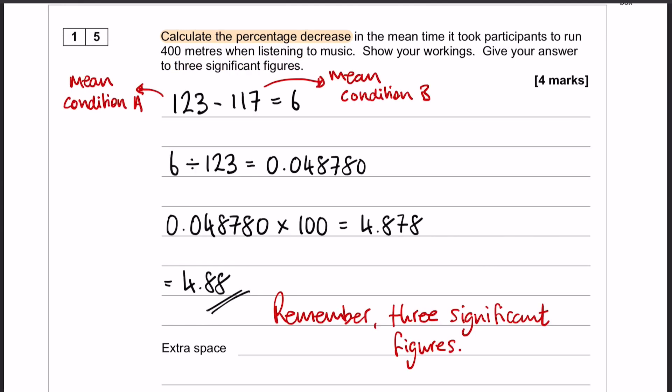So we are going to take the mean time taken in condition A, which is 123, and we're going to subtract the mean time taken in condition B. That leaves us with 6.